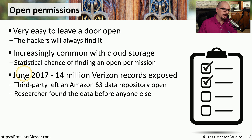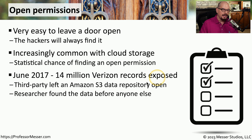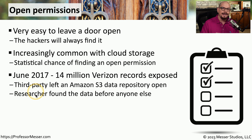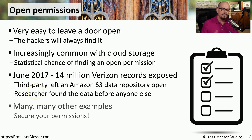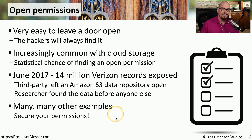A popular example of this occurred in June of 2017, when 14 million Verizon records were found on the internet, open and available to be downloaded. A third party had left an Amazon S3 data repository open without any type of passwords or security. Fortunately, this information was found by a researcher and not an attacker, so they were able to close this security loophole and confirm that no one else had downloaded any of this information. Although this story turned out to be rather insignificant for the 14 million records exposed, there are many other examples of information being made public without the intention of the data owner.